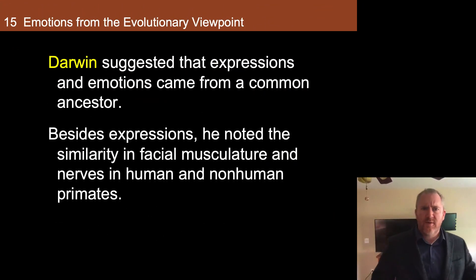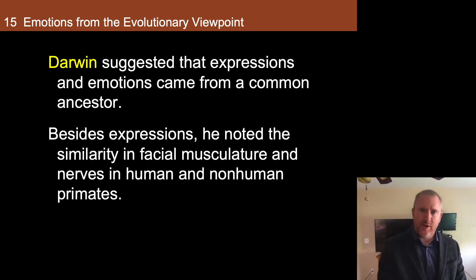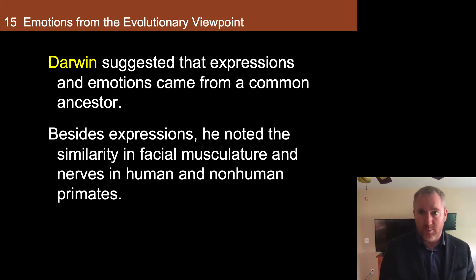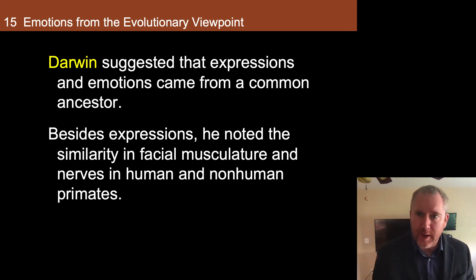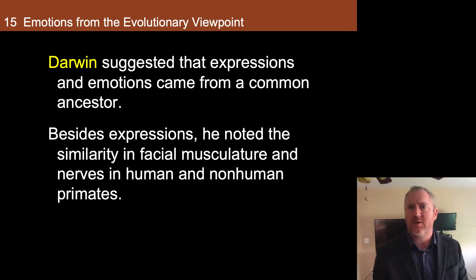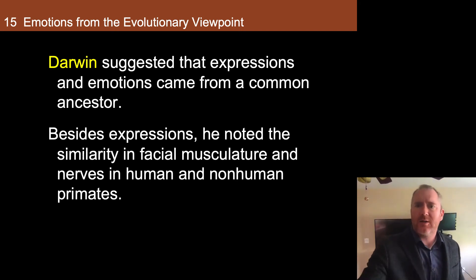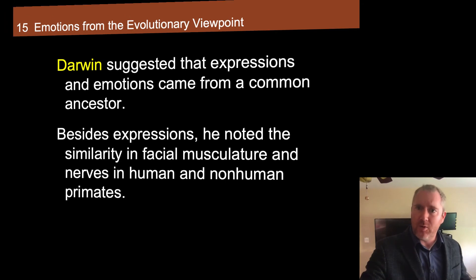As you learned in the video, Darwin first suggested that expressions and emotions come from a common evolutionary ancestor. Besides expressions, he noted the similarities in facial musculature and nerves in humans and non-human primates. Non-human primates typically communicate by lip smacking — this can denote a variety of things, but one fundamental use is to establish subordinate-dominance relationships.